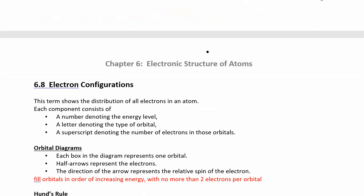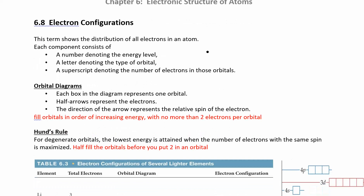Let's start looking at writing electron configurations. If you see a term like 4p5, the 4 is the energy level, p is the type of orbital, and the superscript 5 is the number of electrons in that orbital. We're going to build up a bunch of these terms to figure out the electron configuration for an atom.